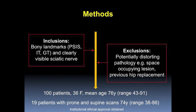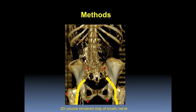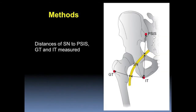After exclusions, including distorting pathology and total hip joint replacements, we were left with 100 supine scans and 19 prone scans to be analysed by dual consensus. The centre of the sciatic nerve and most superficial parts of the bony landmarks were marked using Cyrex 3.0 software. 3D multi-planar reconstructions and 3D volumetric reconstructions were then created, and the nerve measured in relation to the bony landmarks — that is, the posterior superior iliac spine, greater trochanter, and ischial tuberosity.